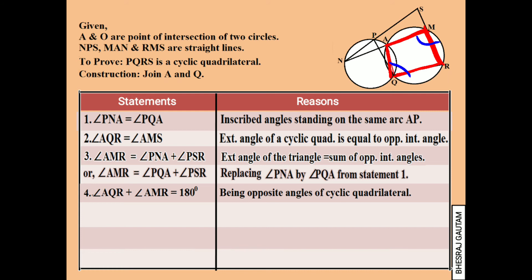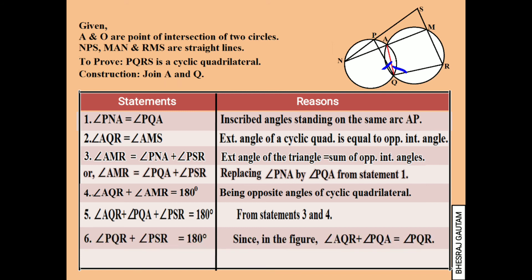From the figure, angle AQR and angle PQA together form angle PQR. So we can write angle PQR plus angle PSR is equal to 180 degrees.